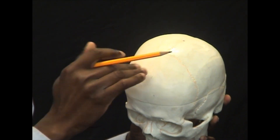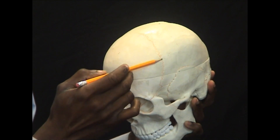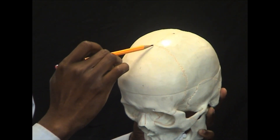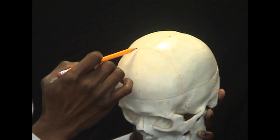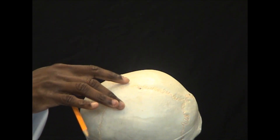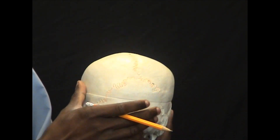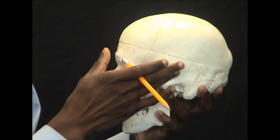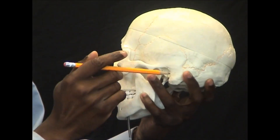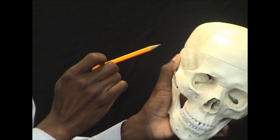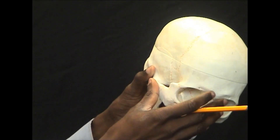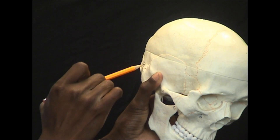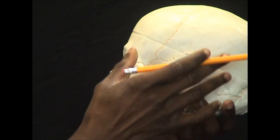These bones are fused together at joints called sutures. Joining the frontal bone to the parietal bones is called the coronal suture. Joining the two parietal bones is the sagittal suture, and joining the posterior occipital bone to the parietal bones is the lambdoid suture. Lateral, on the sides of the head, are two bones called the temporal bones. The temporal bone is fused to the parietal bones by way of the squamous suture, as you can see right here. And that's primarily the cranial bones.